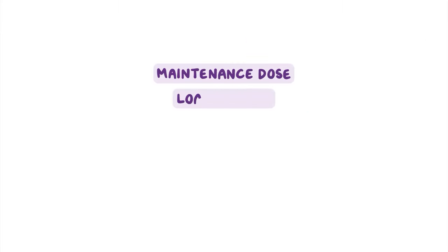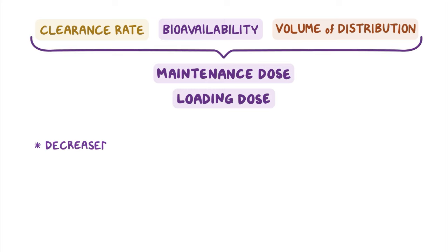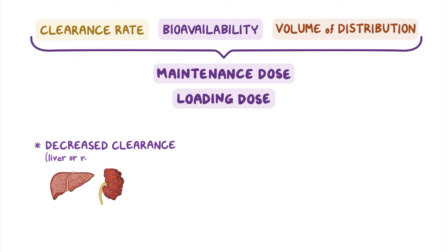In short, maintenance dose and loading dose calculations are mainly dependent on the clearance rate, bioavailability, and volume of distribution. Individuals who have decreased clearance, such as those with liver or renal disease, may require a lower maintenance dose and possibly an extended dosing interval to achieve target plasma concentrations. However, the initial loading dose typically remains the same, since the volume of distribution is not affected.